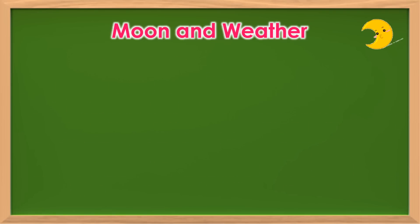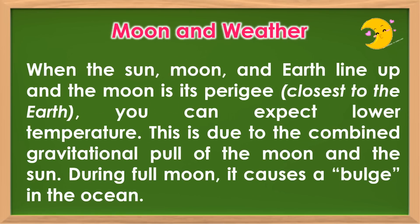Moon and weather. When the sun, moon, and Earth line up, and the moon is at its perigee or closest to the Earth, you can expect lower temperatures. This is due to the combined gravitational pull of the moon and the sun. During full moon, it causes a bulge in the ocean.